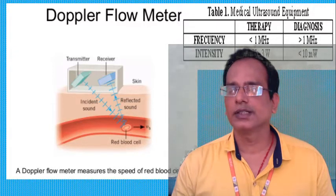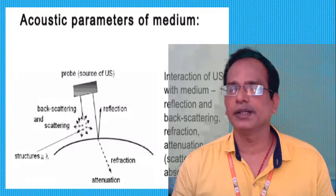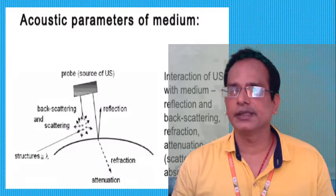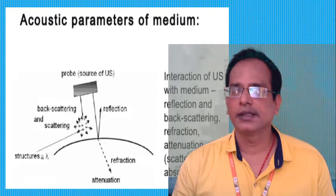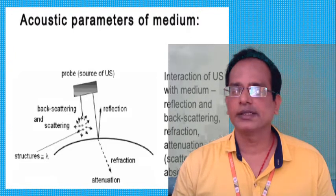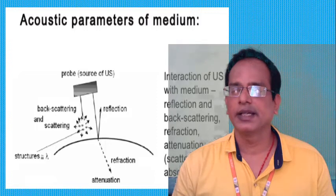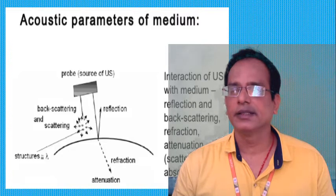Next, the acoustic parameters of the medium: an ultrasonic source probe generates ultrasound which passes through the human body. Some rays are scattered, some are reflected, and some are refracted — penetrating into the body. There is attenuation; the reflected ultrasound is captured, providing information about internal organs. The interaction of ultrasound with the medium — through reflection, backscattering, refraction, and absorption — provides useful information.